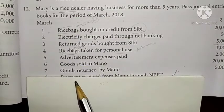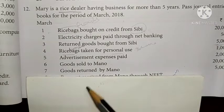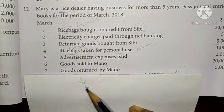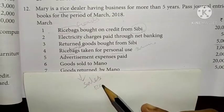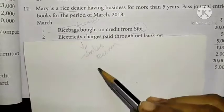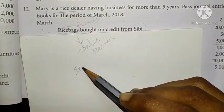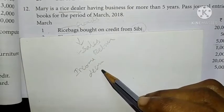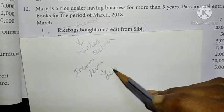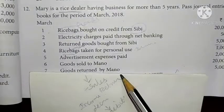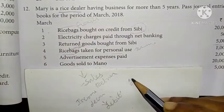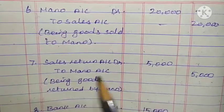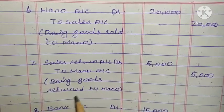Date 7: Goods returned by Mano, 5,000. Goods returned by Mano — Sales Return. Sales is income; income credit side, so income decreased goes to debit side. Mano is the giver. Sales Return account debited 5,000; To Mano account 5,000. Being goods returned by Mano.